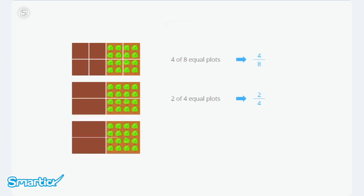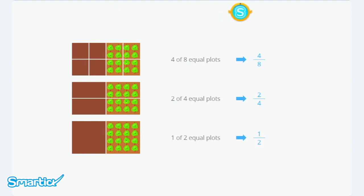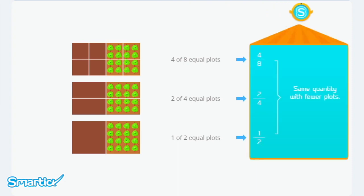She realized that she can remove another fence in order to make all the furrows in one go. Now she is going to plant in one of two equal plots. So one of two equal plots equals one-half — it's half of the allotment. If you look carefully, you can see that all the fractions represent the same amount of the allotment, even though there is a smaller number of plots.